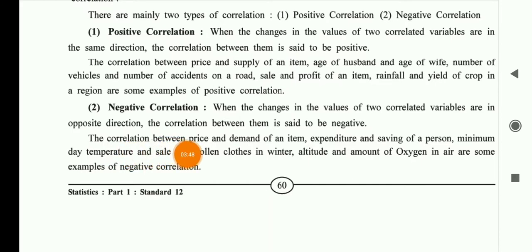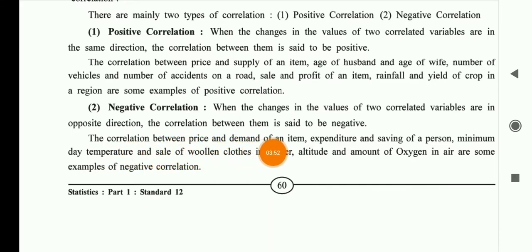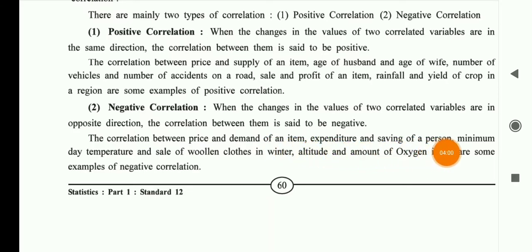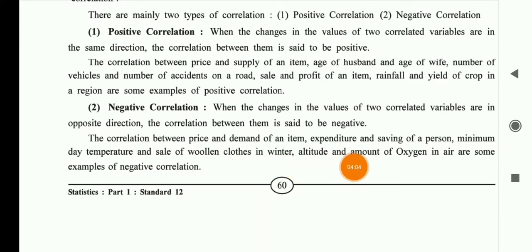Now, the correlation between price and demand is negative — when price goes up, demand goes down, and when price is down, demand goes up. Expenditure and savings of a person, minimum daily temperature and sales of wool and winter clothes — these are all examples of negative correlation, where the two variables move in opposite directions.